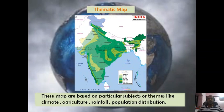On a thematic map, a particular subject or theme is shown. For example, this map shows the distribution of annual rainfall in different parts of India. Besides rainfall, climate, agriculture, and population distribution can also be represented by means of a thematic map.